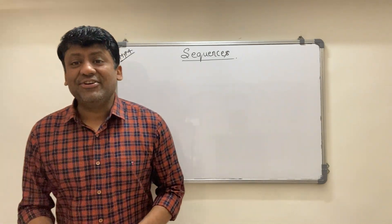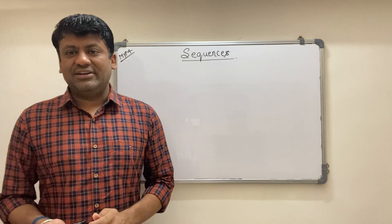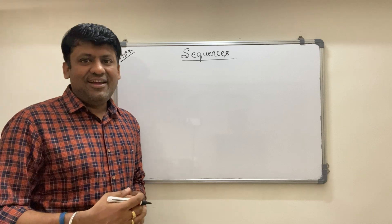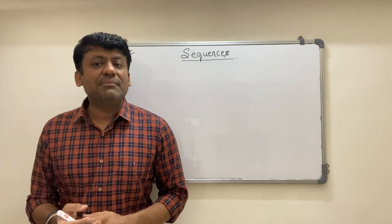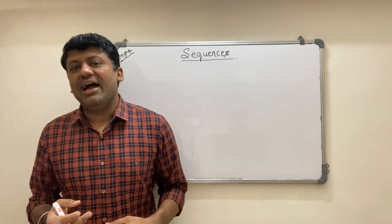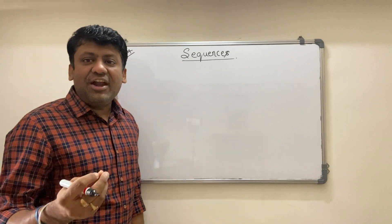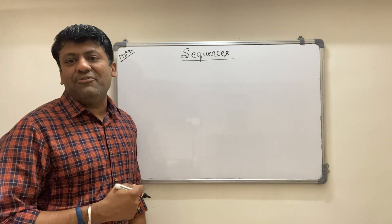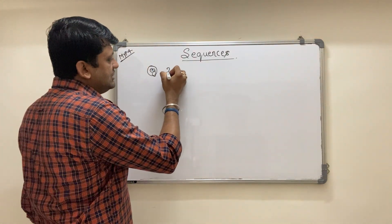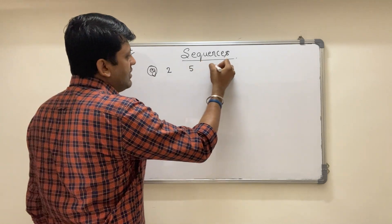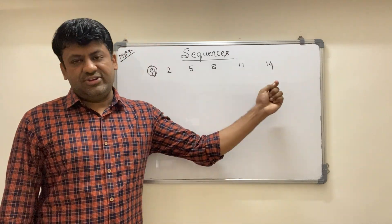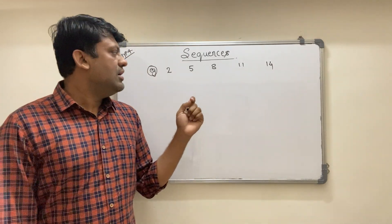Good morning. Today we are going to start one of the MYP 4 chapters, which is also a part of MYP 5, known as sequences. Sequences is nothing but a pattern, and in that pattern you have to solve different questions and find their answers. I'll first start with an example before starting the theory and formula. The first example I take is 2, 5, 8, 11, and 14 — this is a sequence or a progression. Both are the same thing.